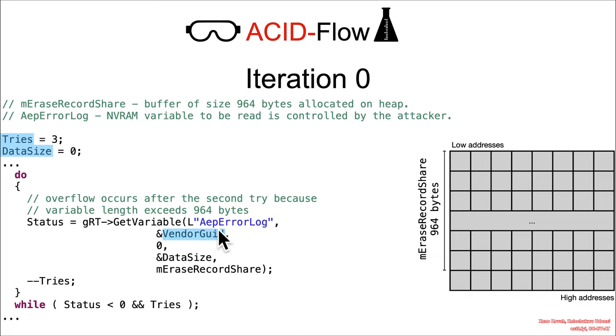It calls get variable, trying to get the AEP error log variable. We've got a hard-coded zero, data size which is zero, and our uninitialized mEraseRecordShare, which is that 964 bytes.